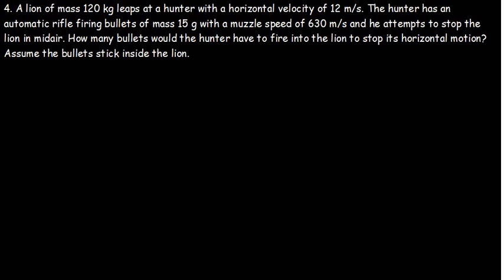I have a very interesting question under linear momentum. The question says: a lion of mass 120 kg leaps at a hunter with a horizontal velocity of 12 meters per second. The hunter has an automatic rifle firing bullets of mass 15 grams with a muzzle speed of 630 meters per second. He attempts to stop the lion in mid-air. How many bullets would the hunter have to fire into the lion to stop its horizontal motion? Assume the bullets stick inside the lion.